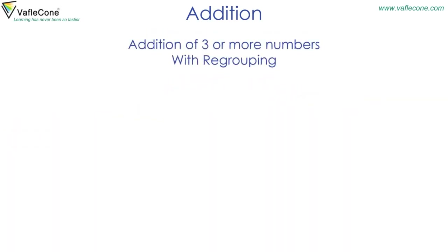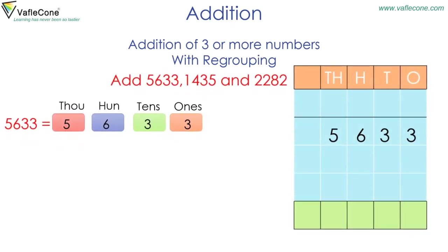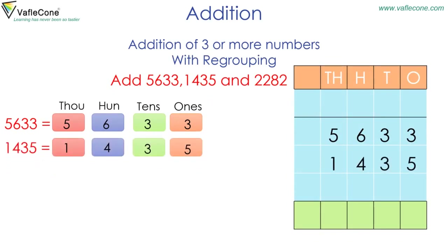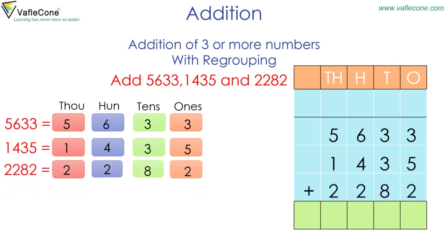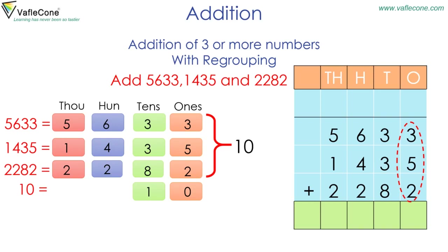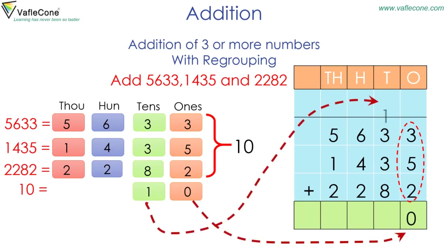Addition up to thousands. Addition of three or more numbers with regrouping. Add 5633, 1435, and 2282. Arrange the addends as per place value and start adding from the ones place. Three plus five plus two is equal to ten. And ten is one ten and zero ones. So placing zero at the ones place and one at the tens place.